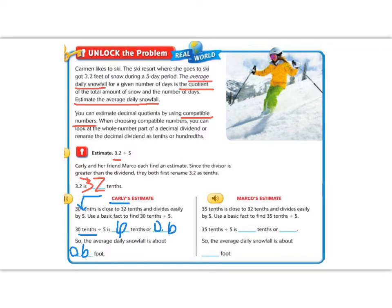Now Marco says that we should round to 35, because 32 is close to 35, and 5 goes into 35 evenly. I agree, that also works. So let's divide. 35 tenths divided by 5 is 7, because 7 times 5 is 35.